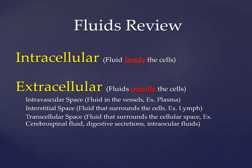Our interstitial space is the fluid that surrounds our cells — our lymph tissue — and contains about 11 to 12 liters of fluid. Then our transcellular space is the fluid surrounding our cellular space, including cerebrospinal fluid, digestive secretions, and intraocular fluid — the fluid in your eye — totaling about one liter of fluid.